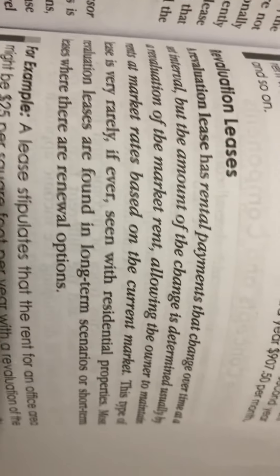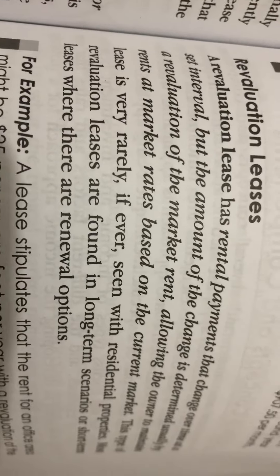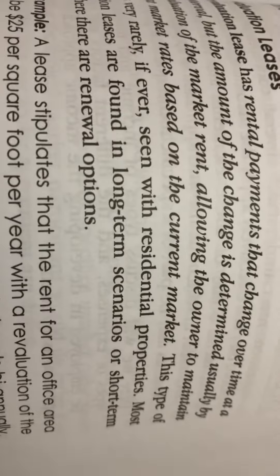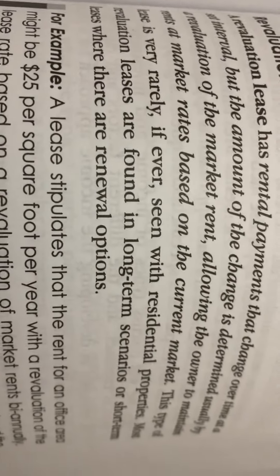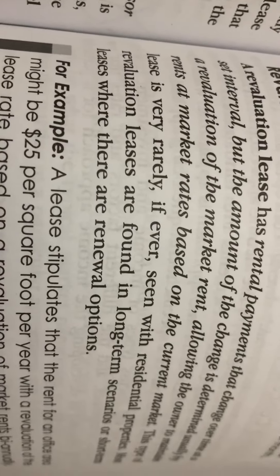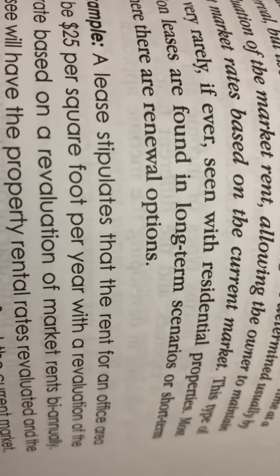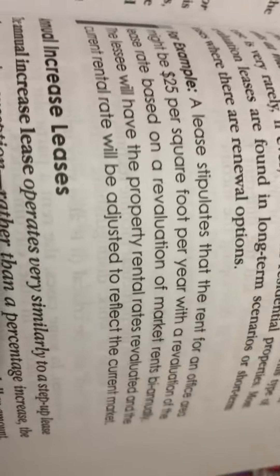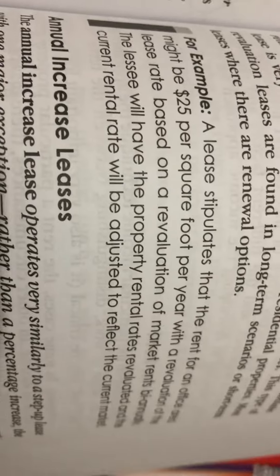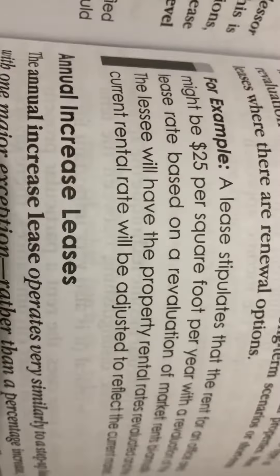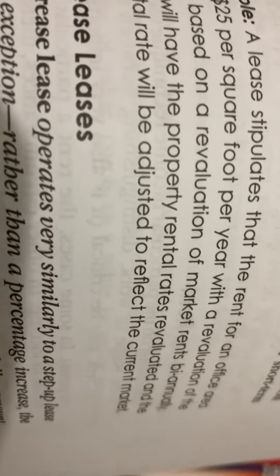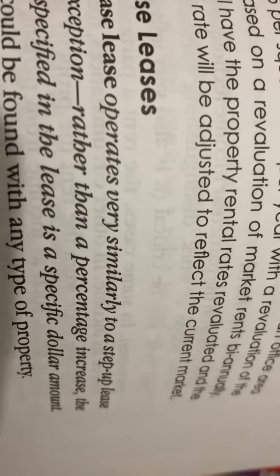A revaluation lease has rental payments that change over time at a set interval, but the amount of the change is determined usually by a revaluation of the market rent, allowing the owner to maintain rents at market rates based on the current market. This type of lease is very rarely, if ever, seen with residential properties. Most revaluation leases are found in long-term scenarios or short-term leases with renewal options. For example, a lease stipulates that the rent for an office area might be $25 per square foot per year, with a revaluation of the lease rate based on market rents biannually. The lessee will have property rental rates revaluated and the current rental rate adjusted to reflect the current market.